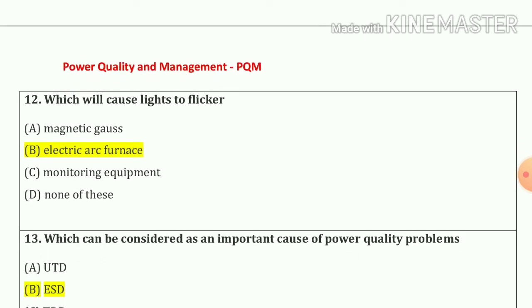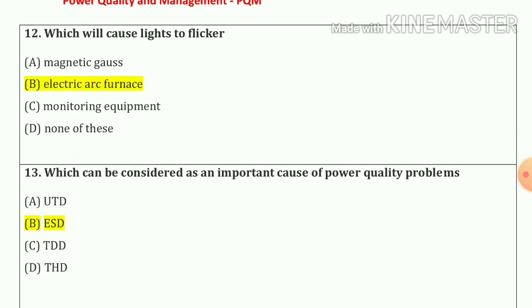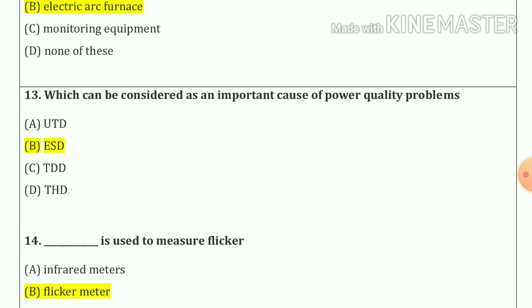Question number eleven: which is used to measure magnetic field strength? The answer is option B. Question number twelve: which will cause lights to flicker? The answer is electric arc furnaces, option B. Question number thirteen: which can be considered as an important cause of power quality problems? The answer is option B.